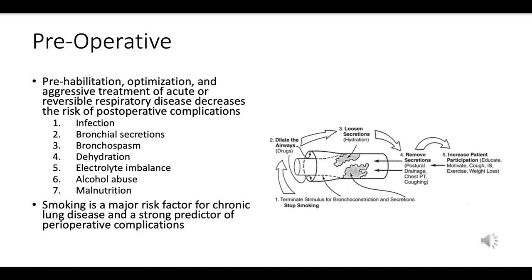Dehydration can make bronchial secretions thicker and harder to clear, so adequate hydration is important. Electrolyte imbalances, especially of potassium and magnesium, can exacerbate conditions like bronchospasm. Chronic alcohol consumption can suppress the immune system, affect lung function, and increase the risk of postoperative complications. Malnutrition can reduce a patient's ability to heal post-surgery; nutritional supplementation and counseling are beneficial.